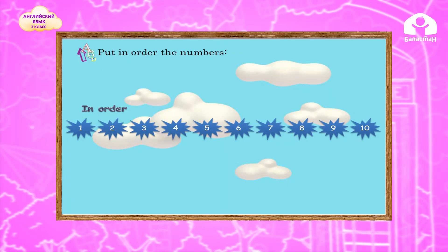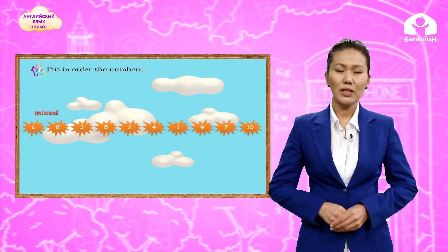Now children, let's remember the numbers. I'll show you numbers and you say together with me: zero, one, two, three, four, five, six, seven, eight, nine, ten. Let's put them in order.